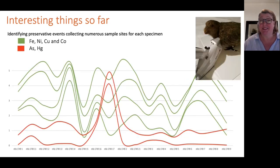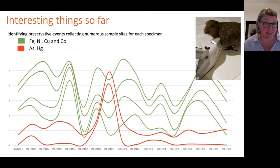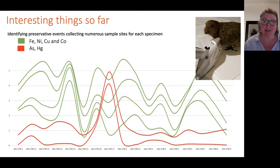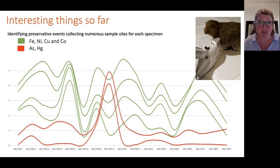Another interesting finding is that using multiple XRF sample spots across a specimen allows you to sort out the preservatives and pesticides by application order. By following co-occurring elements, I can identify preservatives that were applied at the same time. For example, in one cuscus specimen, arsenic and mercury align all the way along the animal, suggesting they were applied simultaneously.